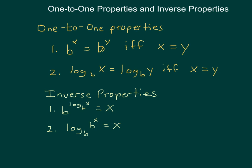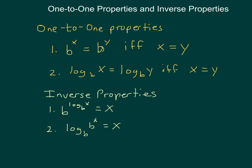With one-to-one properties we have two of them. First: b^x = b^y if and only if x = y. Second: log base b of x equals log base b of y if and only if x = y. In other words, when working with exponential functions, if two exponentials with the same base are equal, their exponents must be equal. Similarly, if two logs with the same base are equal, the arguments inside them must be equal.